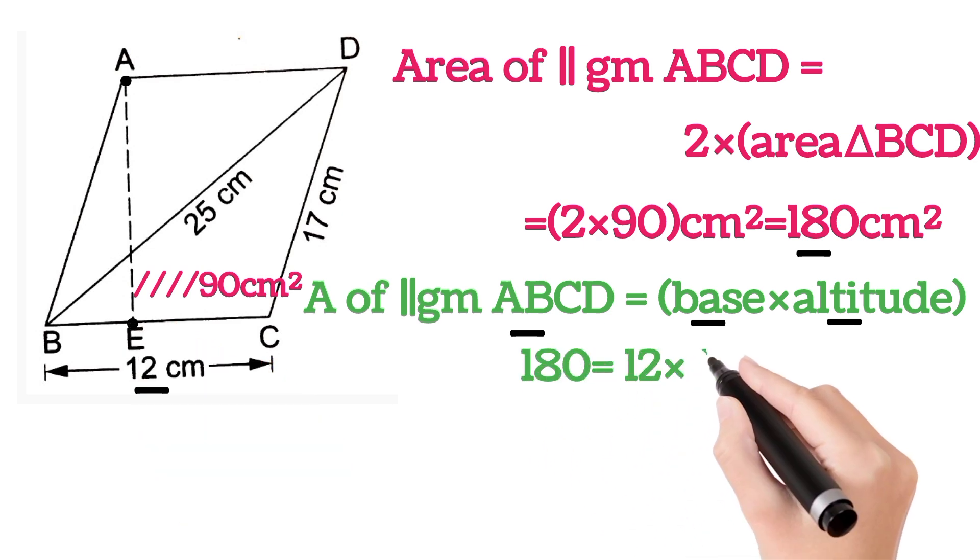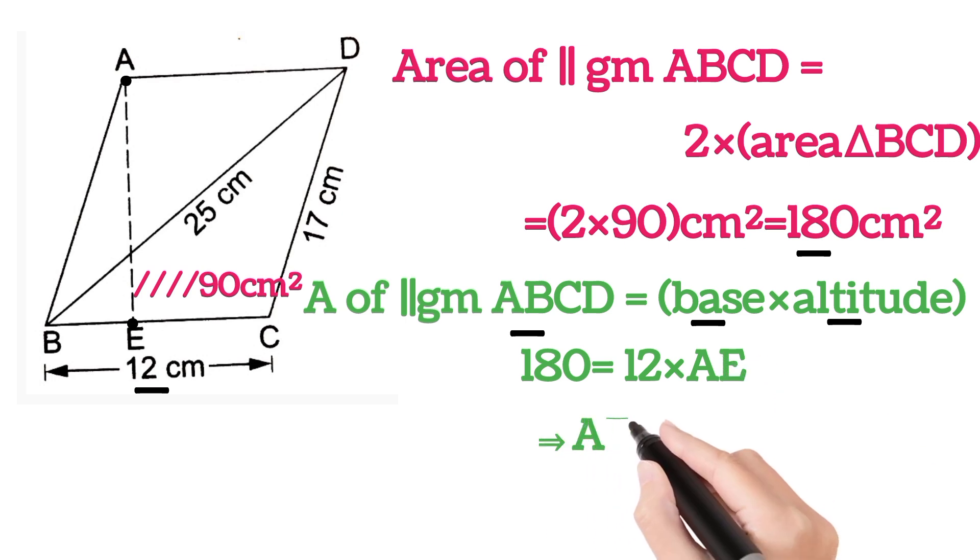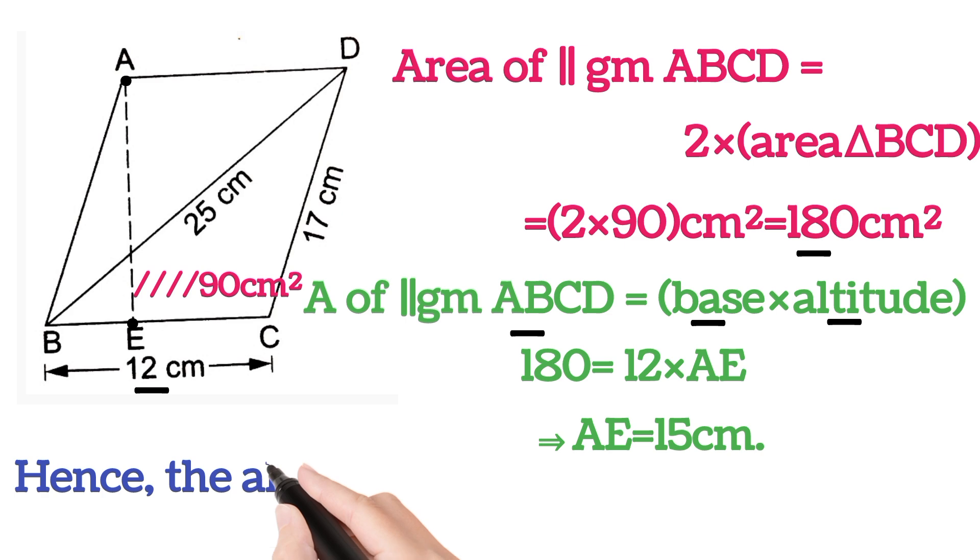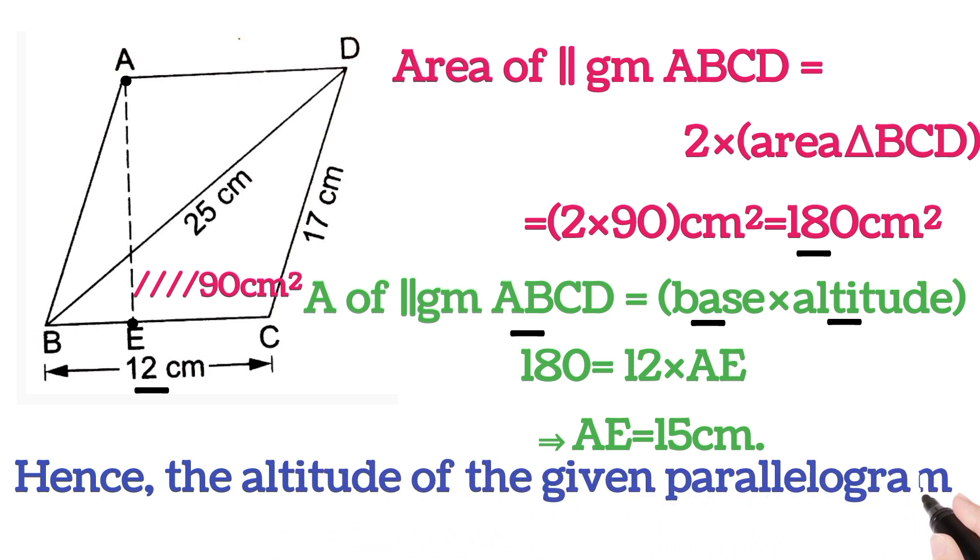...is equal to 12 into AE, which will give AE is equal to 15 centimeters. So the altitude of the given parallelogram is 15 centimeters. So I hope this was very clear to understand.